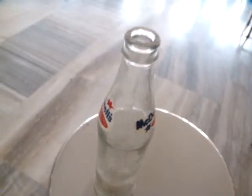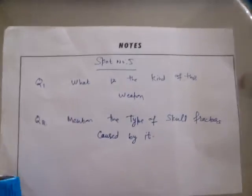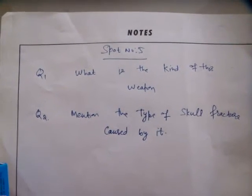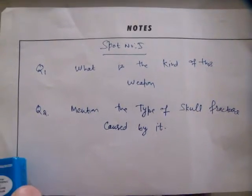So next, this is the spot — an empty bottle. The questions are: what is the kind of this weapon, and mention the type of skull fracture caused by it.